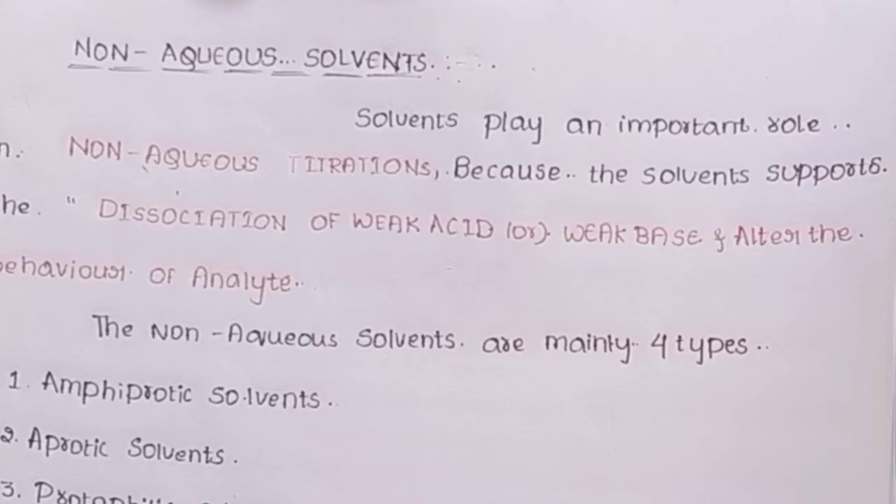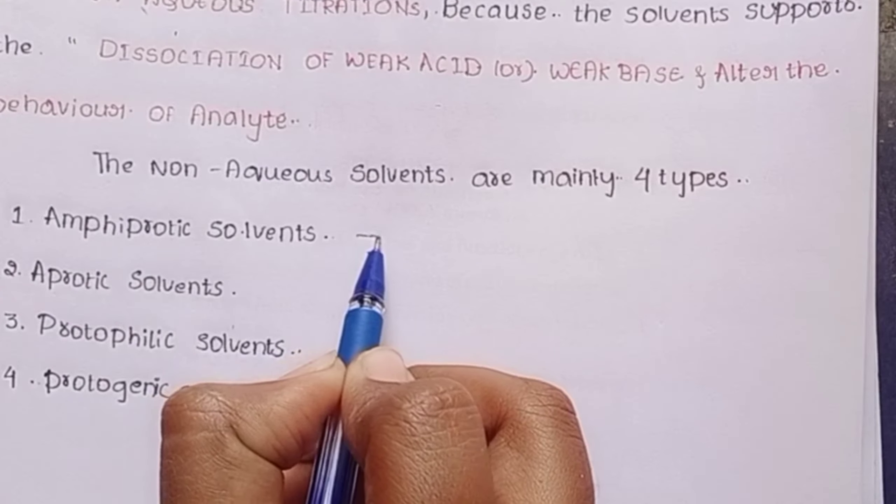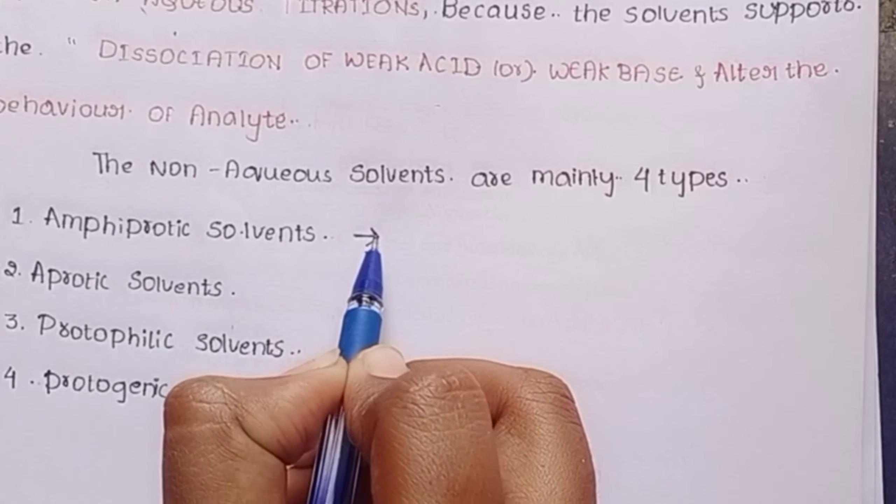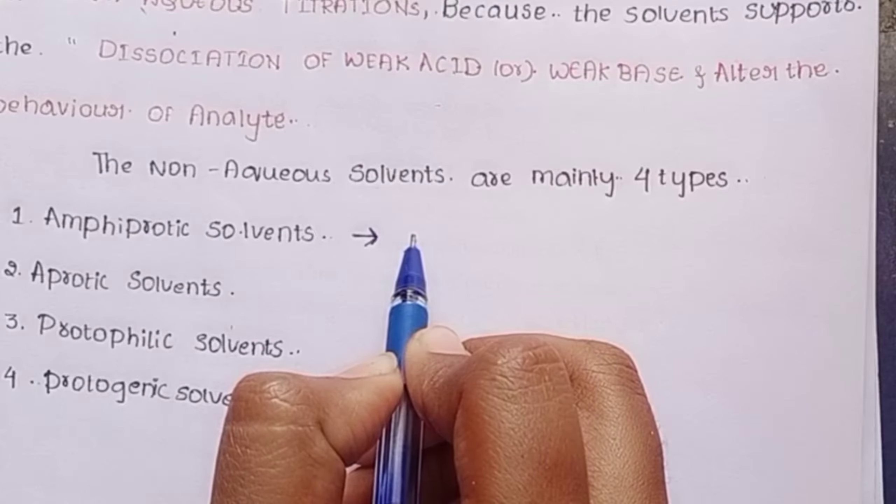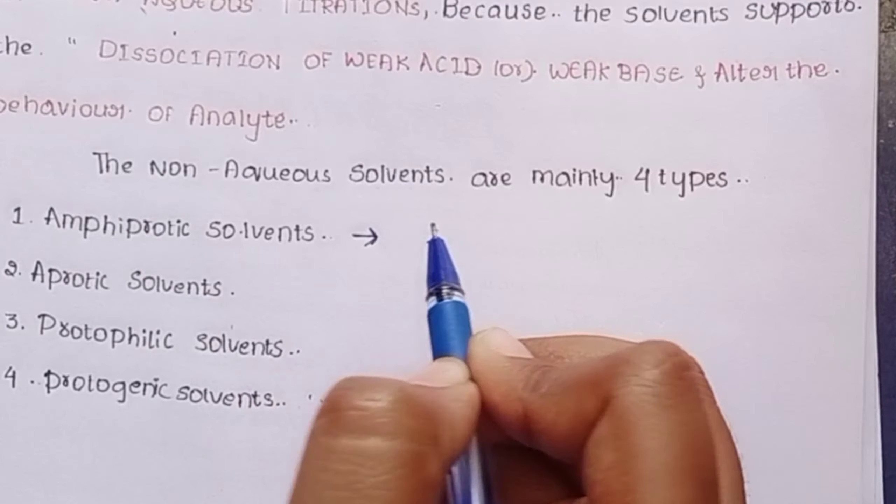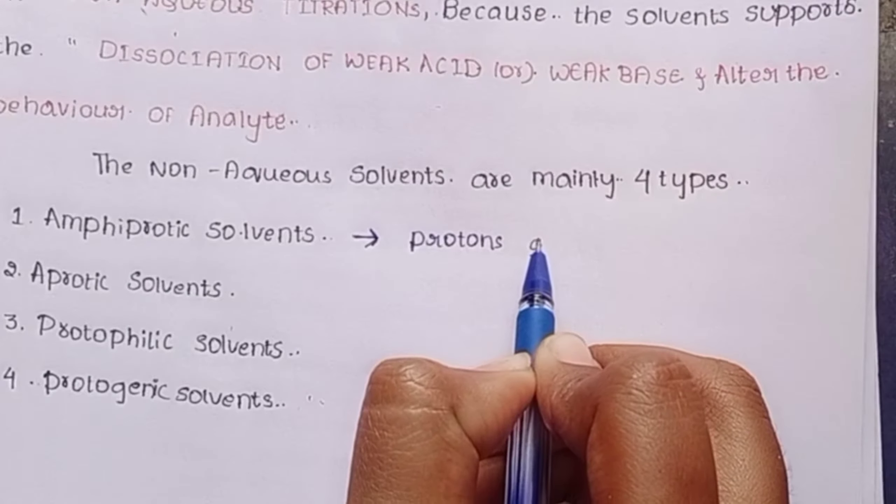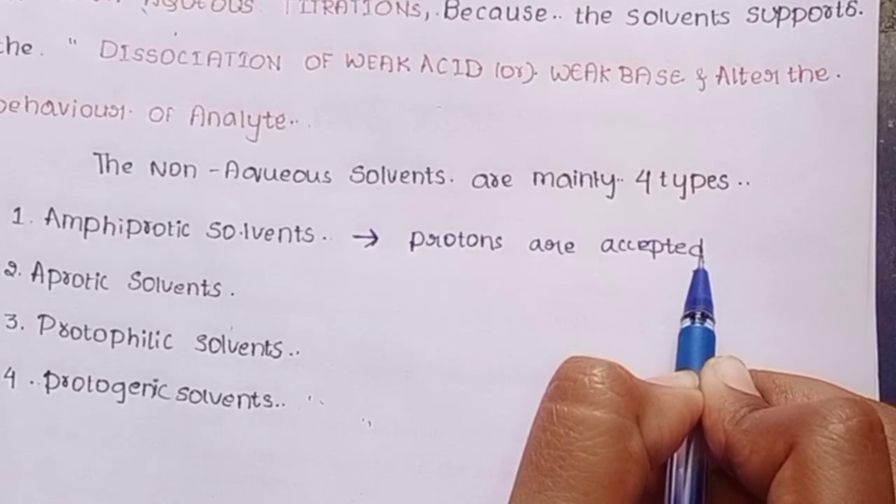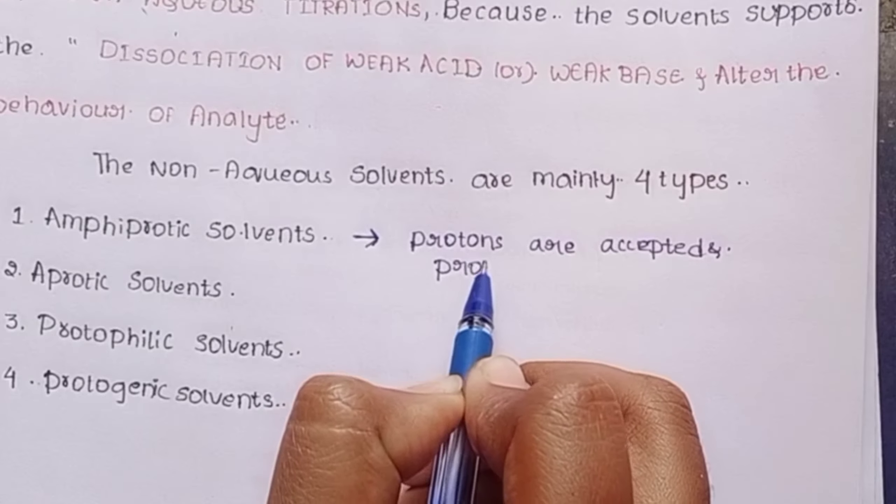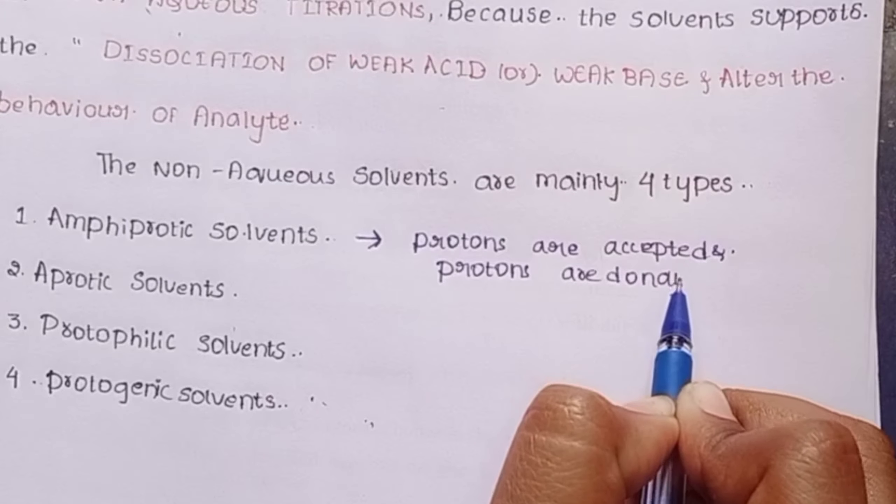First with relations, these can be grouped. Amphiprotic and aprotic are the first group. Amphi means it accepts two properties, both properties. Mainly, protons are accepted and also protons are donated. Amphiprotic means protons are accepted and protons are donated.